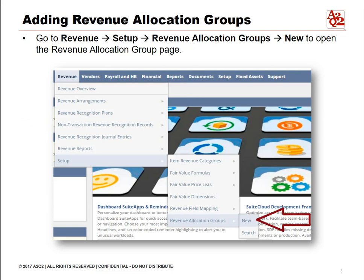To add revenue allocation group values, go to Revenue, highlight Setup, highlight Revenue Allocation Groups, and click New to open the Revenue Allocation Group page.